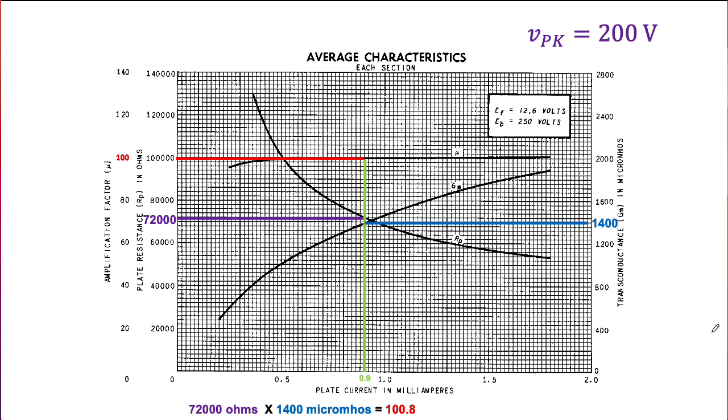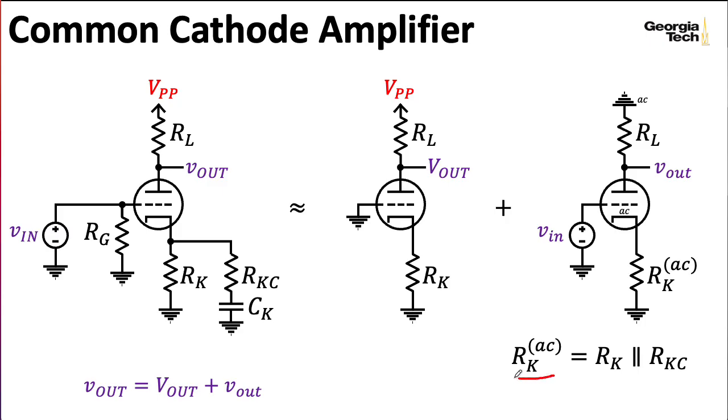So I'm going to derive some formulas using generic variable symbols, and then we'll go back and plug these particular values in later. I've also found that writing the superscript AC all the time is a bit annoying. So in the remaining slides, I'm going to drop that superscript. Just know that our new RK corresponds to this parallel combination.